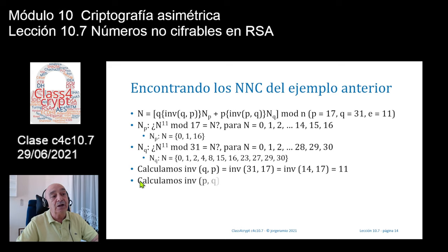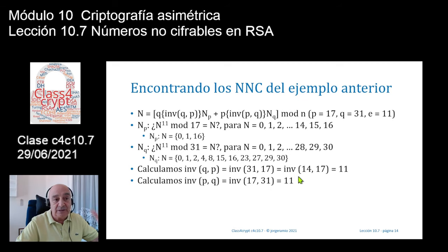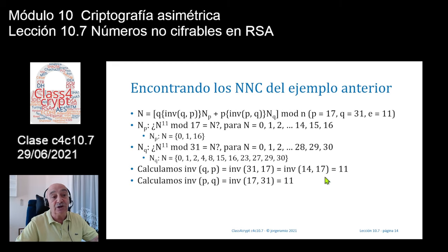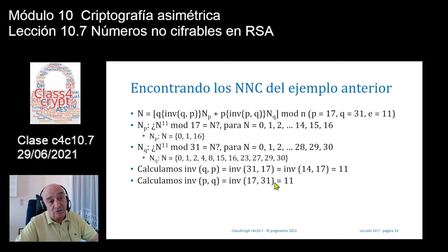Ahora calculo el inverso de P en Q: el inverso de 17 en módulo 31. Casualmente —es solo una casuística de números pequeños— me ha salido exactamente el mismo número. El inverso de 17 en módulo 31 también es igual a 11. Para números mucho más grandes, este tipo de colisiones no se va a dar.